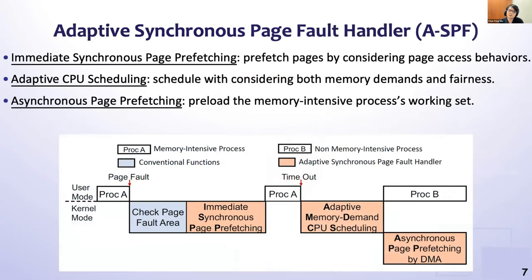We propose an adaptive synchronous page fault handler, ASPF, to deal with working set contention. First, while handling a page fault, our handler runs an immediate synchronous page pre-fetching design to decide which pages to fetch by considering page access behaviors. Second, when a process uses all its time slices, our handler runs an adaptive memory-demand CPU scheduling design to work with the CPU scheduler to schedule the next process. Third, if the running process is non-memory-intensive, our handler runs the synchronous page pre-fetching design to notify DMA to pre-fetch the working set for the next memory-intensive process.